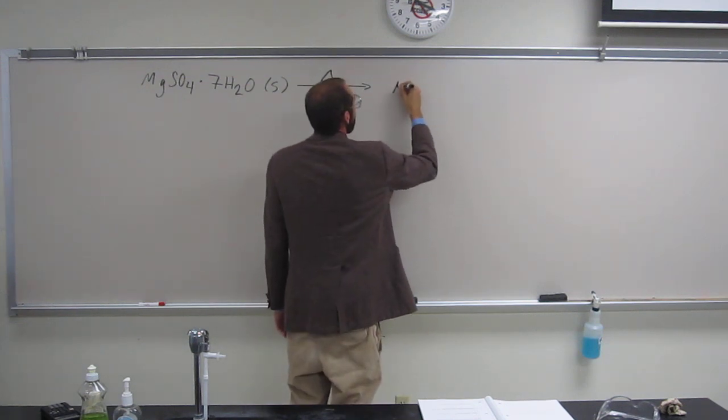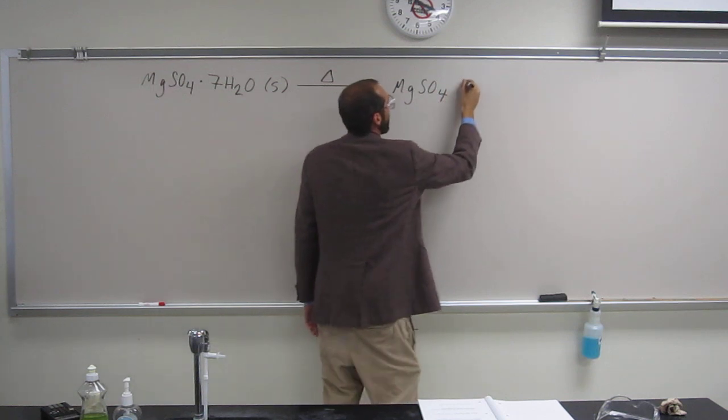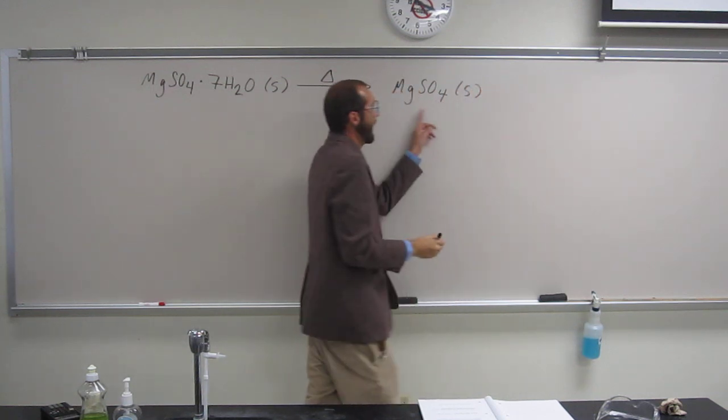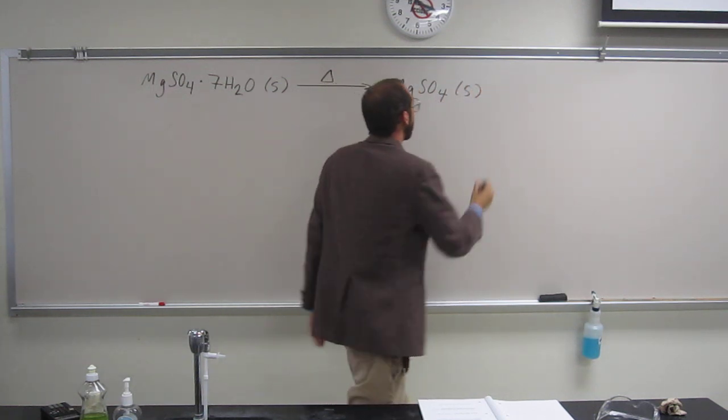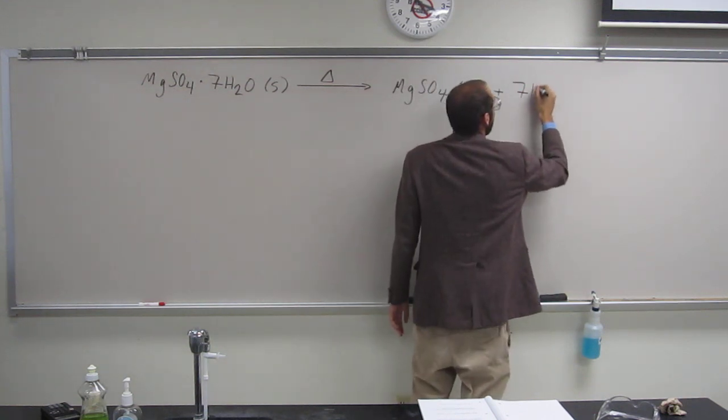And show the balanced equation. So MgSO4 solid - that's what's left, the remnants of what's left. Plus the seven waters that were boiled off.